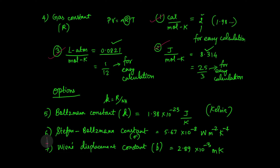There are three values for R. In calories per mole kelvin, the value is 1.98 — easy calculation uses 2. In joules per mole kelvin, the value is 8.314, but for easy calculation you can use 25 by 3.